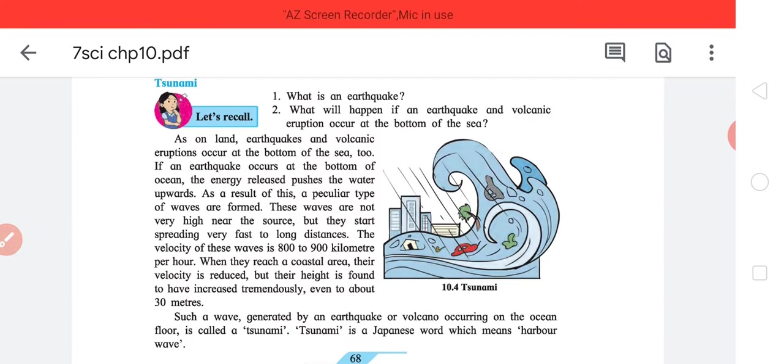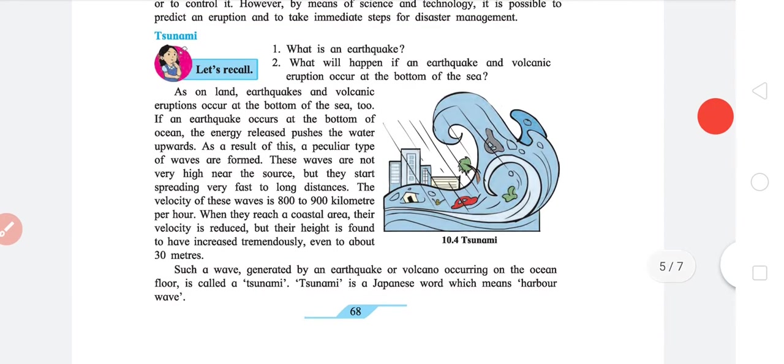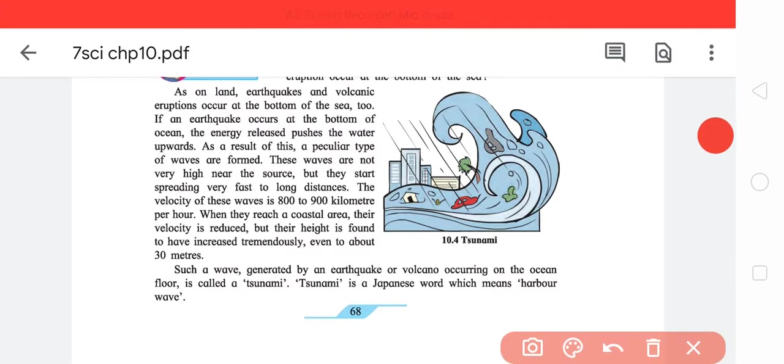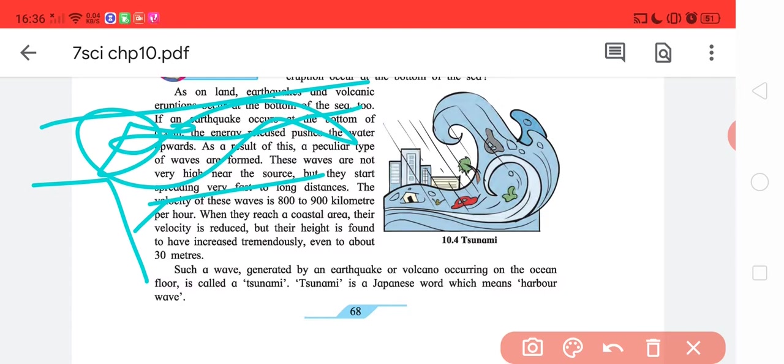Now, these waves are not very high near the source. If you are in the deep sea, you won't feel much, but they start spreading very fast to long distances. They're not going tall, but this disturbance, they are very fast. The velocity of wave is 800 to 900 kilometers per hour. It's really high. When they reach the coastal area, the velocity is reduced, good thing velocity is reduced, but their height is found to increase tremendously, even up to 30 meters.